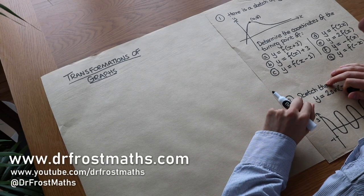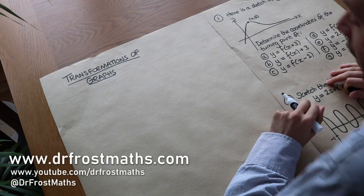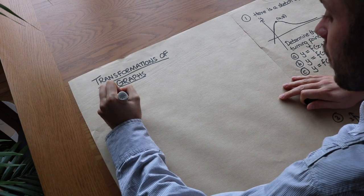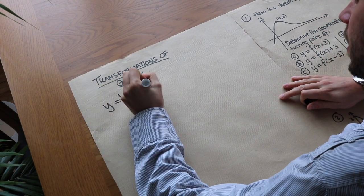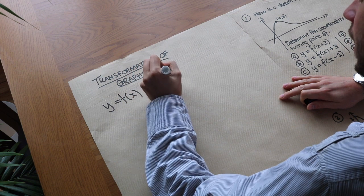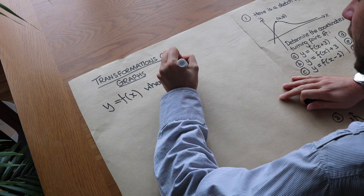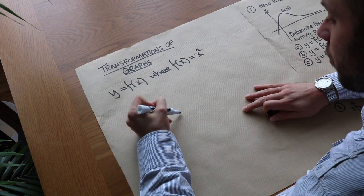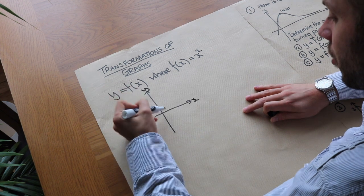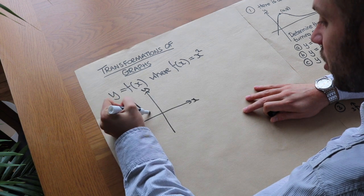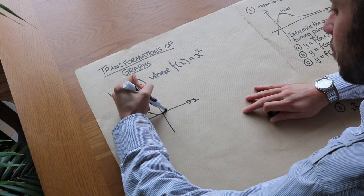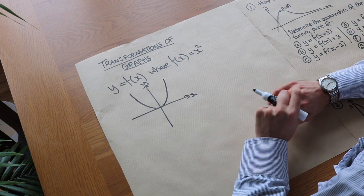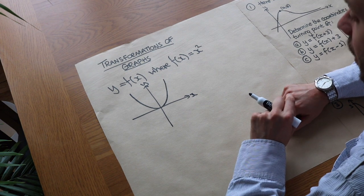Hello and welcome to this video on transformations of graphs. Let's say we were to sketch y equals f of x, where f of x equals x squared. So effectively we're sketching y equals x squared — it's a smiley face shape going through the origin. If you haven't seen the video on sketching quadratic graphs, I advise you watch that first.